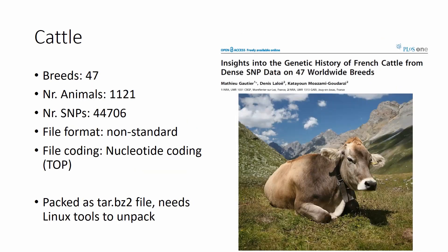Now we move to cattle with a paper published in PLOS ONE. Coincidentally there are also 47 breeds, from more than 1,000 animals and around 44,000 SNPs. The file format is a rather tricky non-standard one, so you have to work with it a bit before you can use it — though this problem might be solved with the bonus material at the end of this video. Nucleotide coding is applied here and we know it uses top-strand coding SNPs. The data is packed as a tar.bz2 file, so you need Linux tools to unpack them.